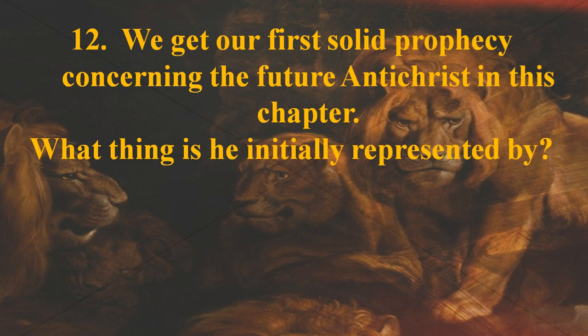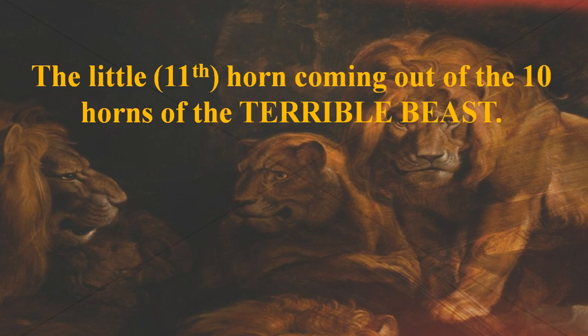Number twelve: we get our first solid prophecy concerning the future Antichrist in this chapter. What thing is he initially represented by? The answer is he's represented by a little horn coming out of the ten terrible horns of the terrible beast — he is the eleventh horn.